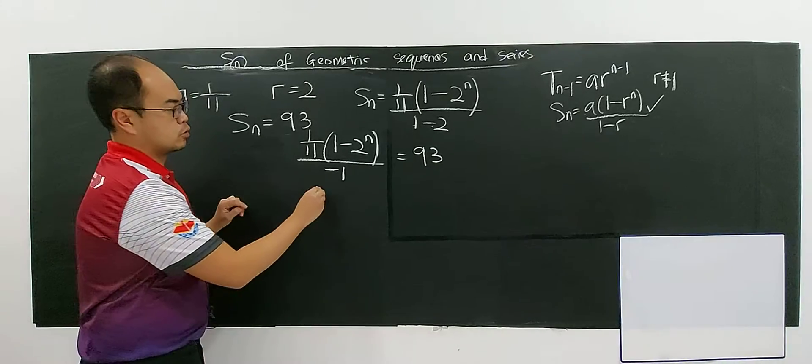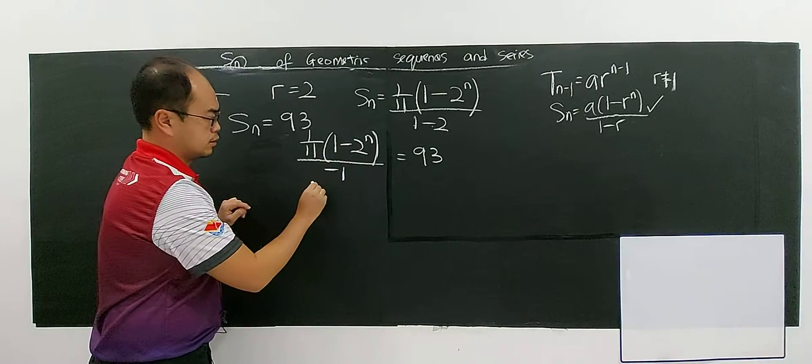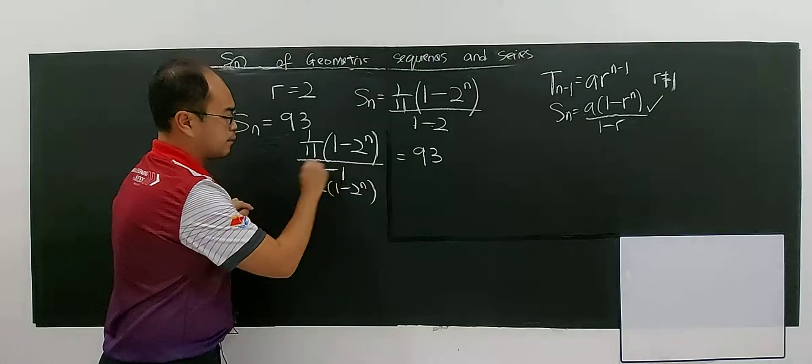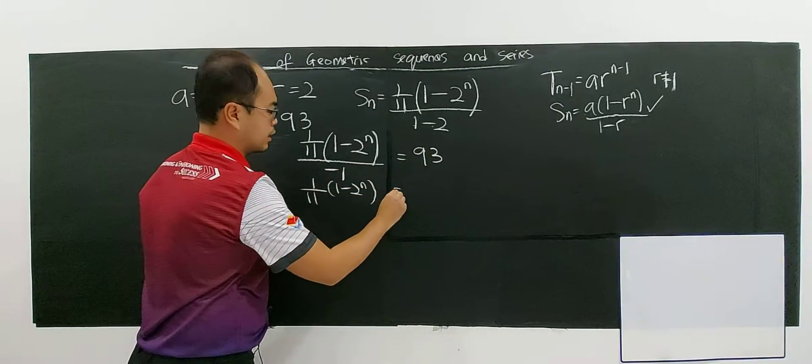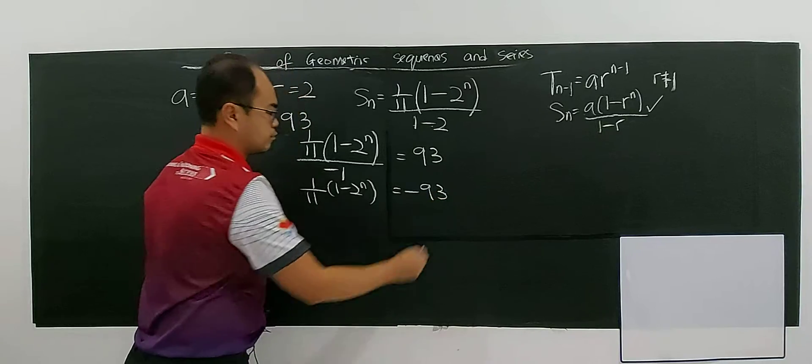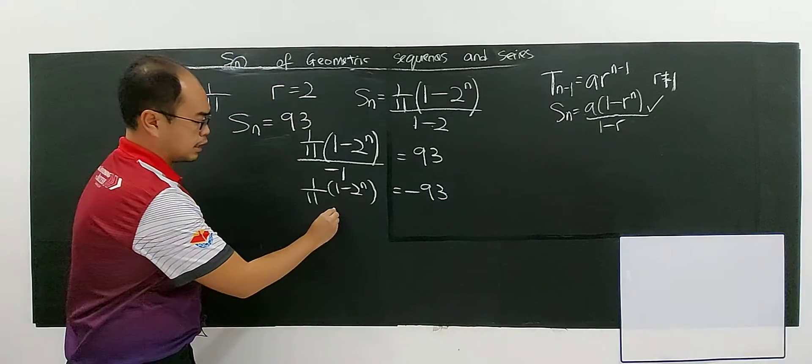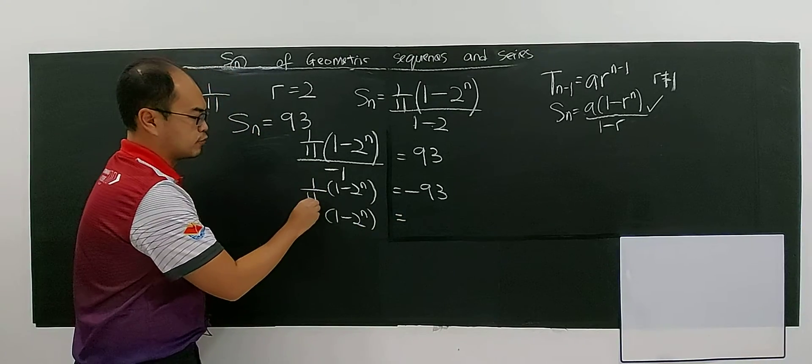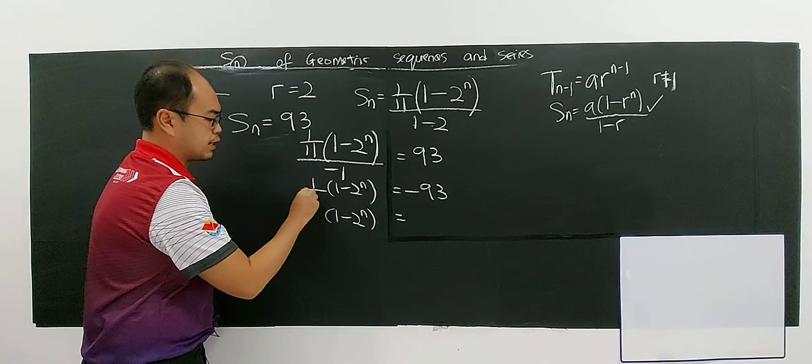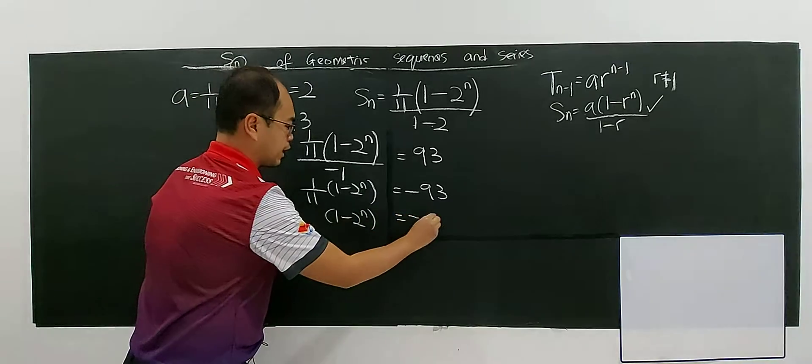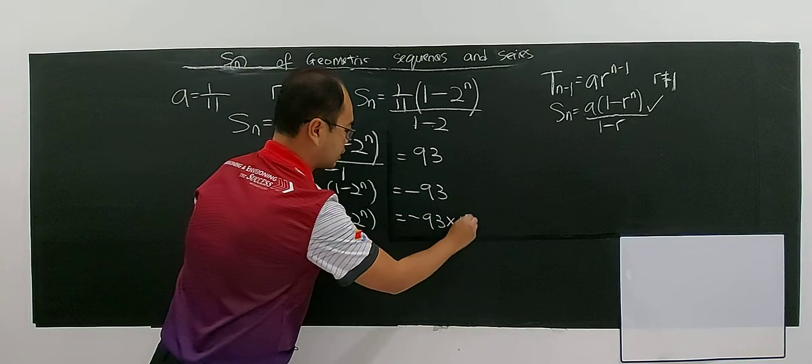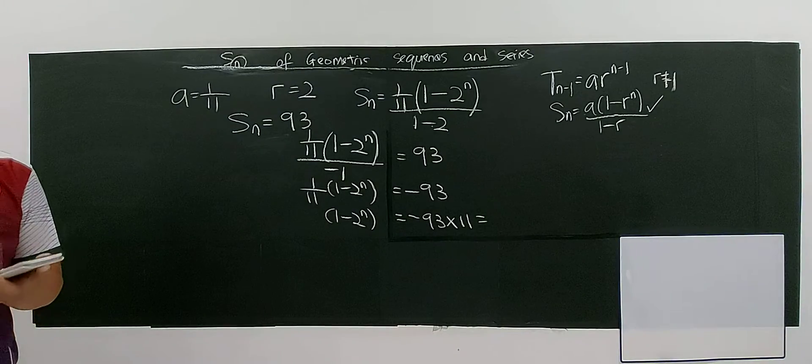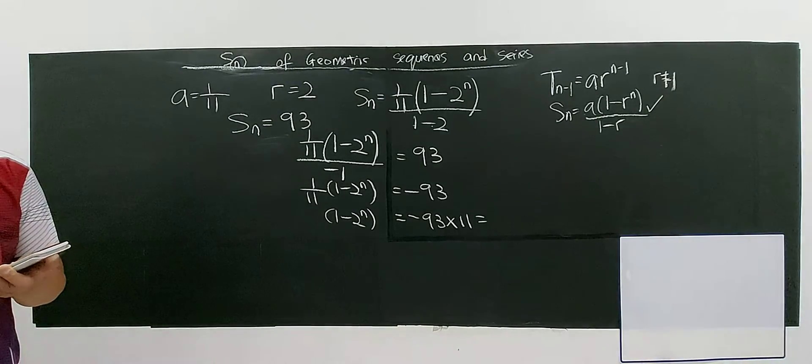So I have (1/11) times (1 - 2^N) divided by negative 1, multiply with negative 93. So then I have (1 - 2^N) equals (1/11), means this divided by 11, so bring over, become negative 93 multiply with 11. So 93 multiply by 11.